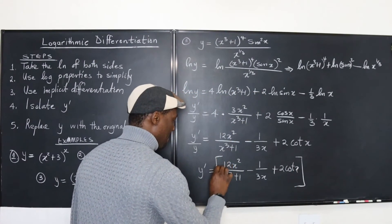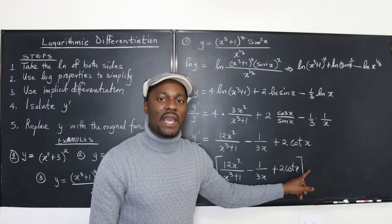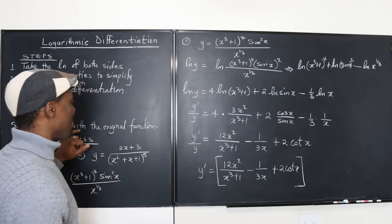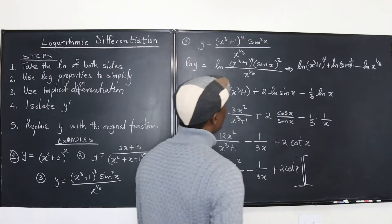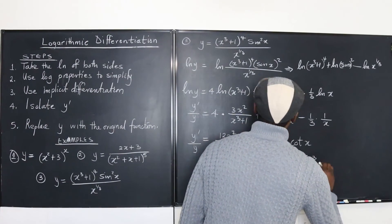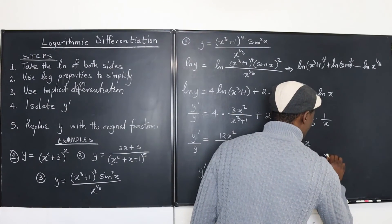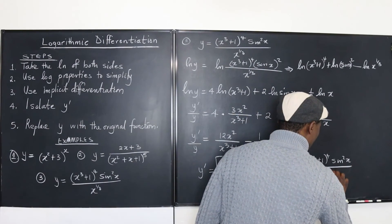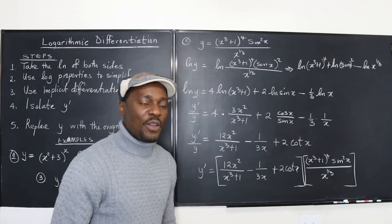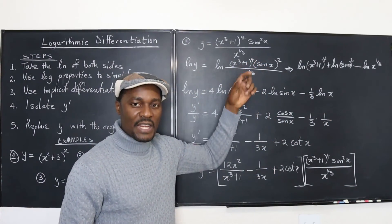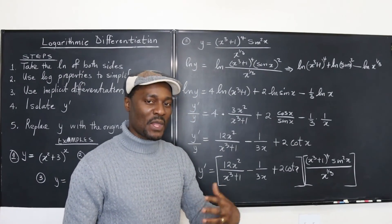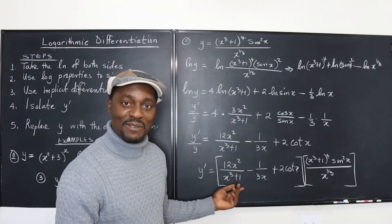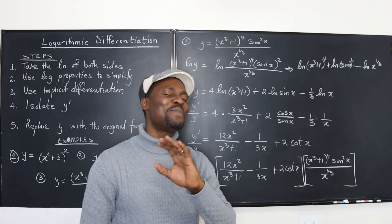Replacing y with the original function, y prime equals 12x squared over x cubed plus 1 plus 2 cotangent x minus 1 over 3x, all multiplied by x cubed plus 1 to the fourth, times sine squared x, divided by x to the one third. If you do this using the quotient rule, leave a comment and tell me which method you'd prefer — quotient rule or logarithmic differentiation. This is quite easy for me; quotient rule can be nasty sometimes.